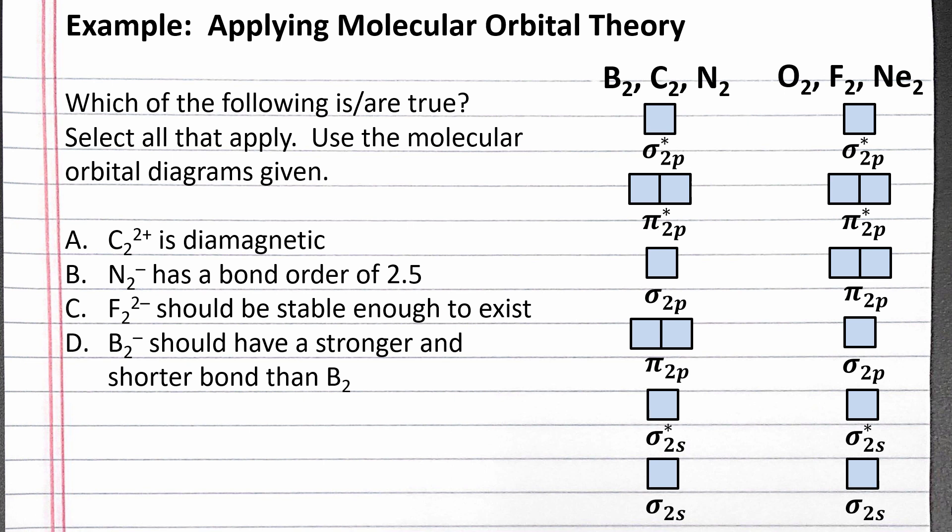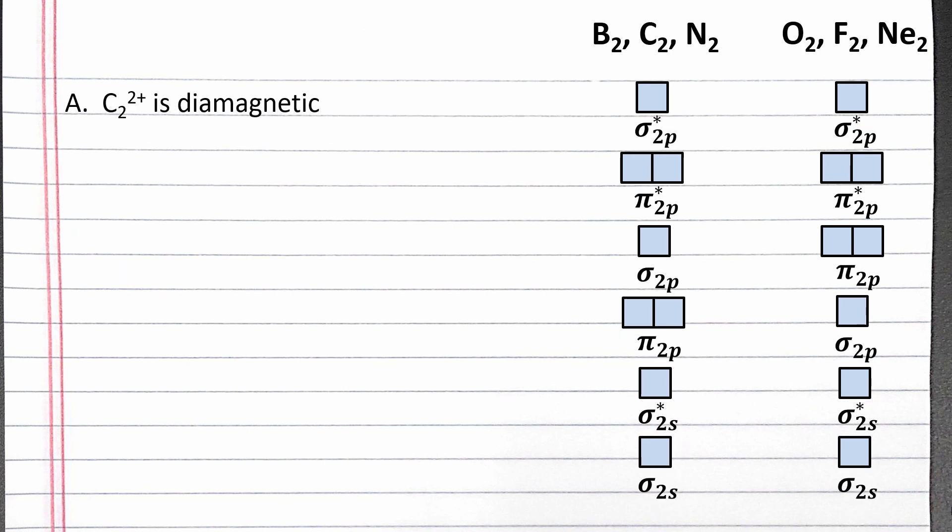Let's discuss each of these using molecular orbital theory. To determine whether C₂²⁺ is diamagnetic or paramagnetic, we need to fill in the molecular orbital diagram for C₂²⁺. The diagram on the left shows the order of filling for B₂, C₂, and N₂ and their charged species. The diagram on the right shows the order of filling for O₂, F₂, and Ne₂ and their charged species. So we'll fill in the molecular orbital diagram on the left.